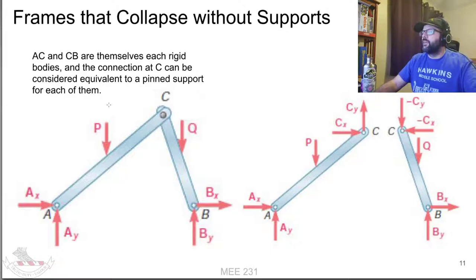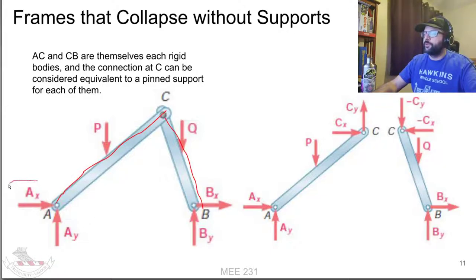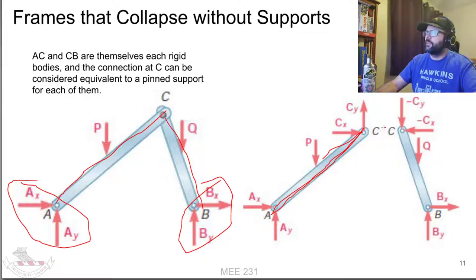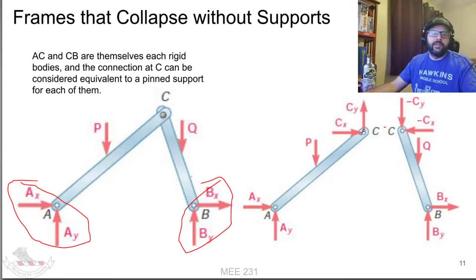We can take this free body diagram of the entire thing with these four unknown reactions. What we can do is keep in mind that while this frame itself is rigid with its supports, each of these bars is also rigid with its supports as long as you consider the connection here at the top to be support. We take this entire thing and break it up into two separate free body diagrams.